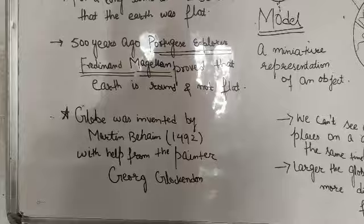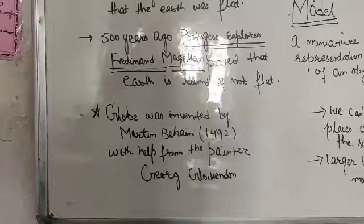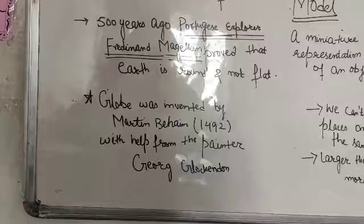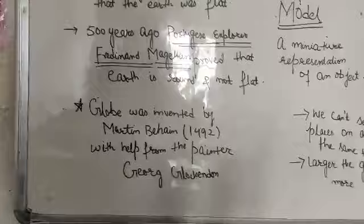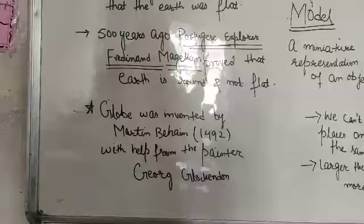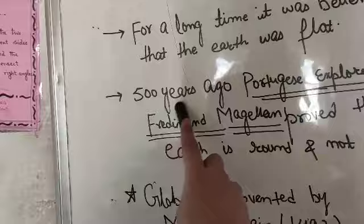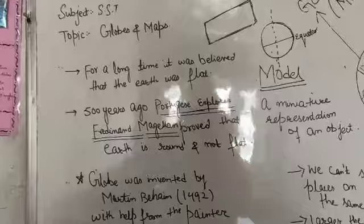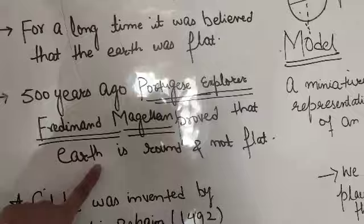At that point, Ferdinand Magellan said that earth is not flat, and he proved it. 500 years ago, Portuguese explorer Ferdinand Magellan proved that earth is round and it was not flat.